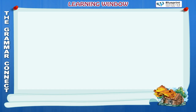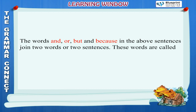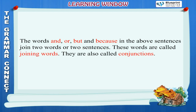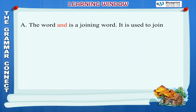The words and, or, but, and because join two words or two sentences. These words are called joining words. They are also called conjunctions. Joining words are words that join two words or two sentences. The word 'and' is a joining word used to join together both words and sentences.